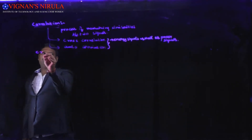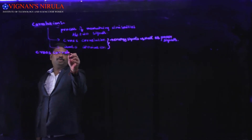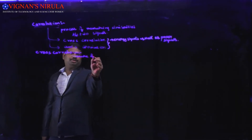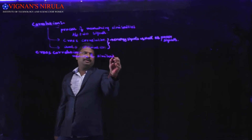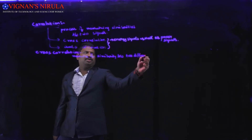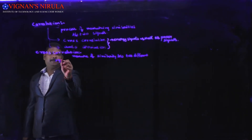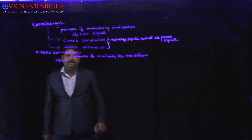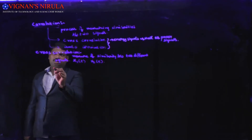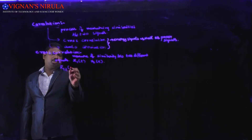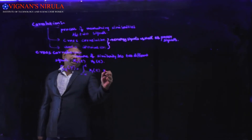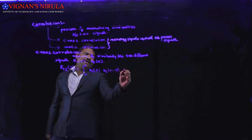First we will define the cross correlation, which is the measure of similarity between two different signals, such as x1(t) and x2(t). Therefore the cross correlation between them will be represented as R12(τ), which is equal to the integral from minus infinity to infinity of x1(t) and x2(t minus τ), integrated with respect to t.